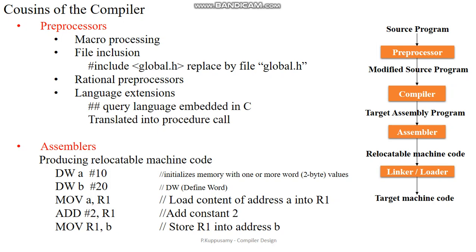Hi viewers, in this lecture we will see about Cousins of the Compiler. The compiler is the tool which translates one programming language into another programming language. Here we are having the compiler and other tools in the language processing system. The preprocessor, assembler, linker, and loader are all needed with the compiler to convert the source program into the target machine code. That's why these are called Cousins of the compiler.